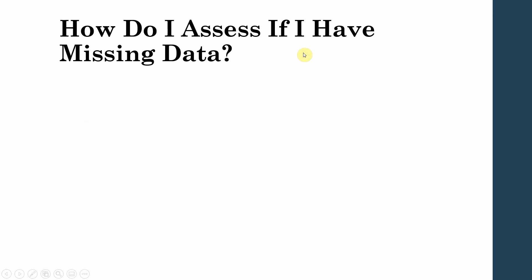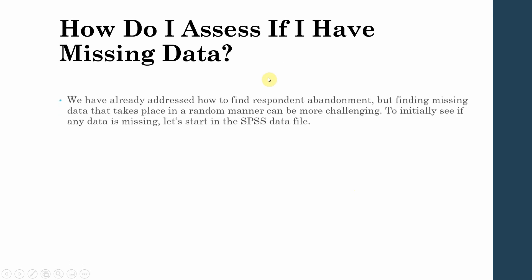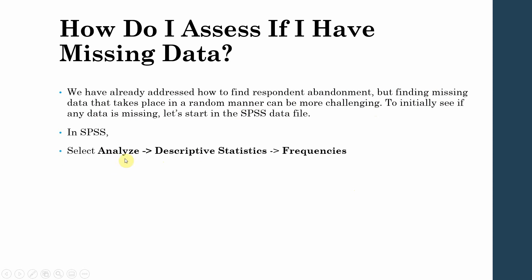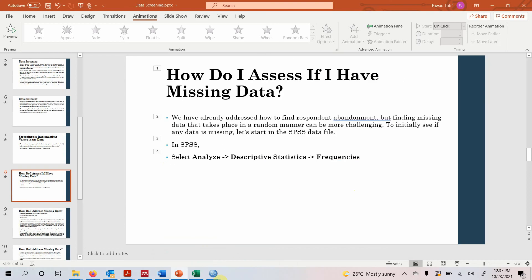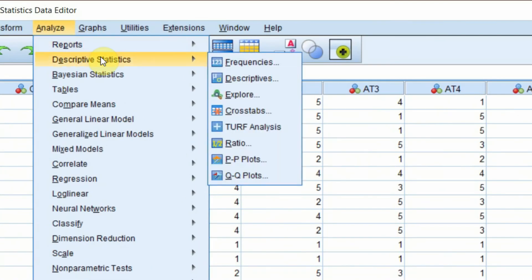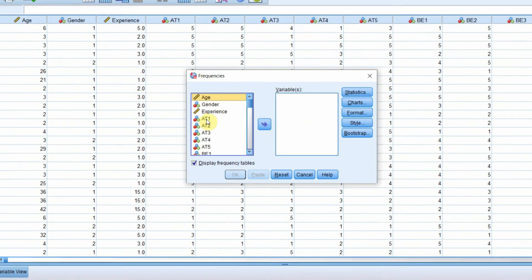Now, how do we assess if we have missing data? We have already addressed how to find respondent abandonment, but finding missing data that occurs in a random manner can be more challenging. To initially check for missing data, we use SPSS. Go to Analyze > Descriptive Statistics > Frequencies.